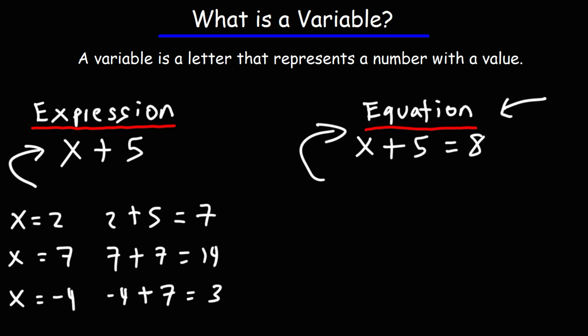So x plus 5 is 8. What number plus 5 is 8? We know that 3 plus 5 is 8. So in this specific linear equation, x has one value, which is 3, because only 3 plus 5 is 8.